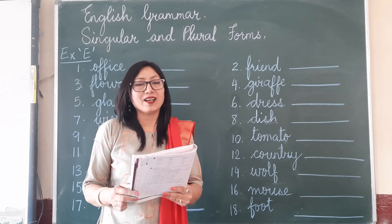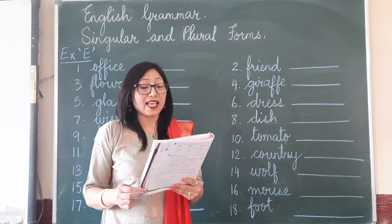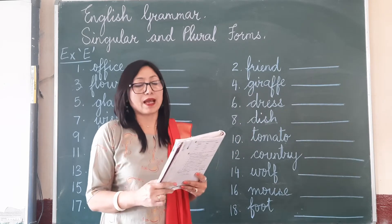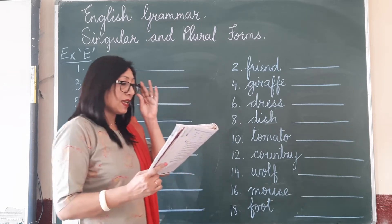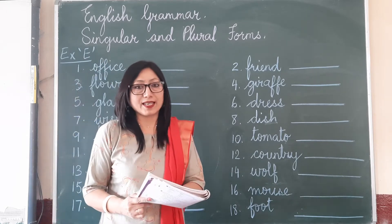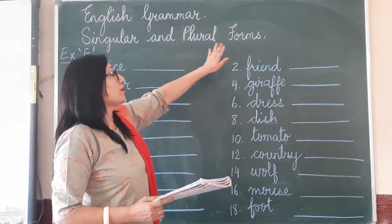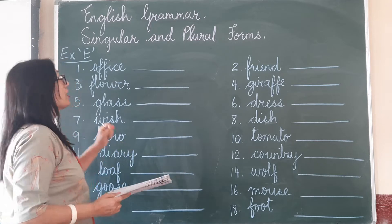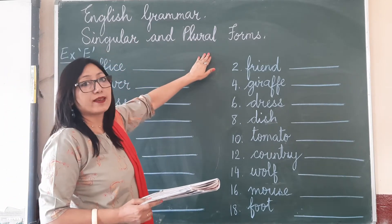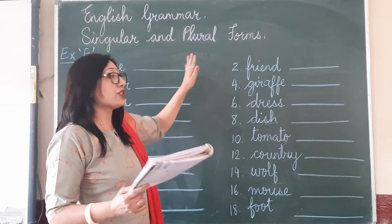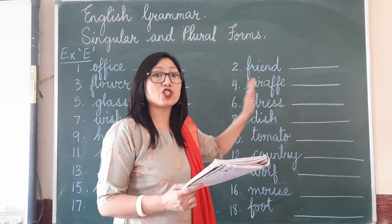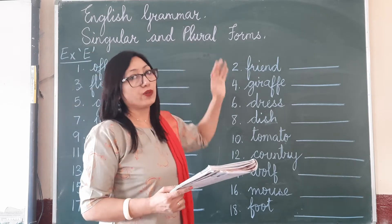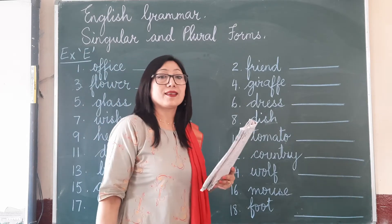Good morning children. Today we will be doing exercise E on page 17 of your English grammar textbook. In the last lesson we did singular and plural forms, and you learned how to change a singular noun into a plural noun. So today we will be doing some nouns, changing them from a singular form to a plural form. Let's do exercise E.